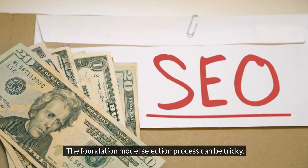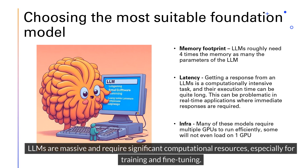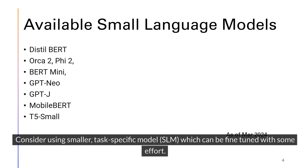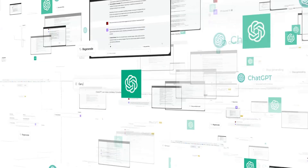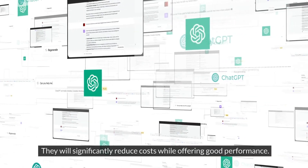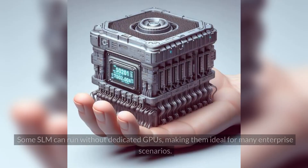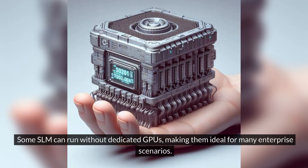The foundation model selection process can be tricky. LLMs are massive and require significant computational resources, especially for training and fine-tuning. Consider using smaller, task-specific models, SLMs, which can be fine-tuned with some effort. They will significantly reduce costs while offering good performance. Some SLMs can run without dedicated GPUs, making them ideal for many enterprise scenarios.